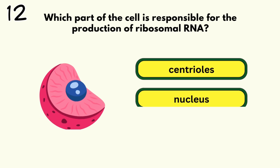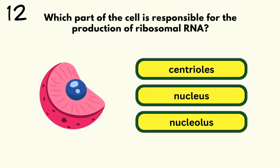Number 12. Which part of the cell is responsible for the production of ribosomal RNA? Nucleolus.